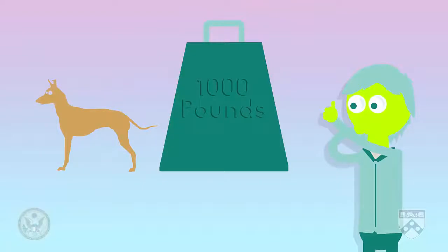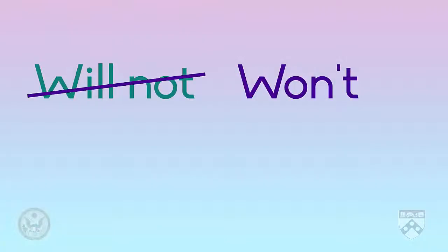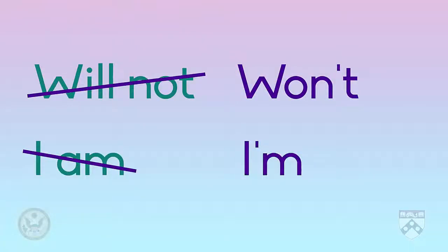A third way that broadcasters create a conversational style is by using contractions. When we have a conversation, we often use contractions, or shortened versions of words, in our speech. For example, instead of saying 'will not,' we say 'won't.' Or we say 'I'm' instead of 'I am.' We normally use contractions instead of the word 'not,' or when we are using the verb 'to be.'